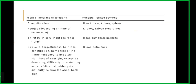If there is dry skin, forgetfulness, hair loss, constipation, numbness of the limbs, tendency to hypotension, loss of eyesight, excessive dreaming, difficulty in sustaining activity or effort, shoulder pain, difficulty raising the arms or back pain — that indicates blood deficiency.